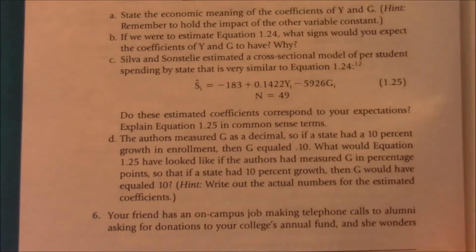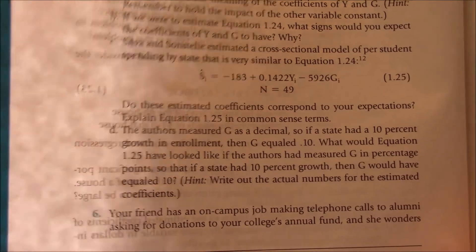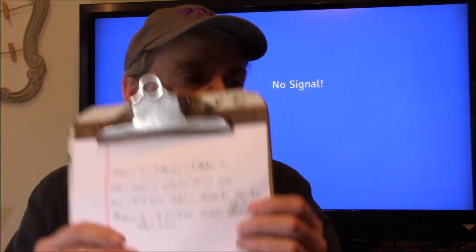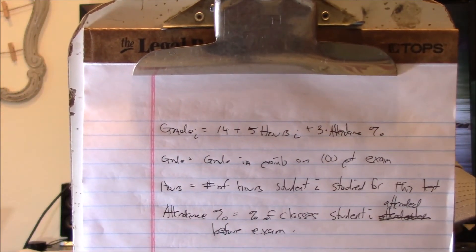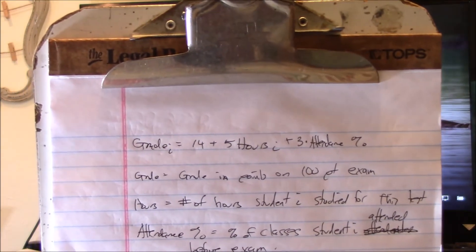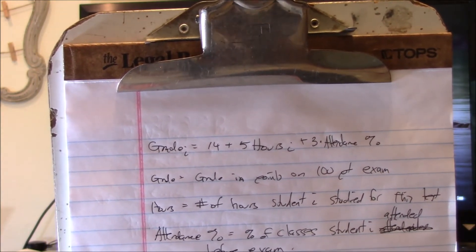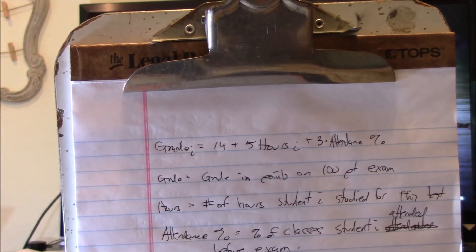And then on part D. Oh yeah, the authors measured G as a decimal, so if a state had a 10% growth in enrollment yada yada yada. All right, so they want you to tell how G would have been described in different units of measure. Okay, and in particular they want you to tell how the coefficient would have changed. What if I had measured the hours of study as minutes of study? All right, now you know there's going to be a 60 in there somewhere. So you have to decide, let's see now, if I would have measured this as minutes of study, would the 5 become 5 times 60 or 5 divided by 60?